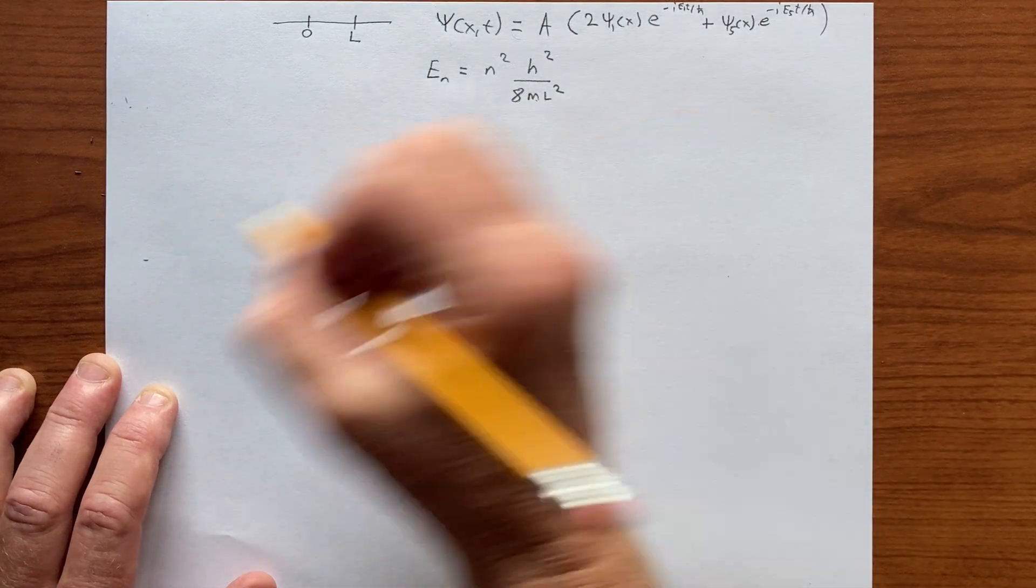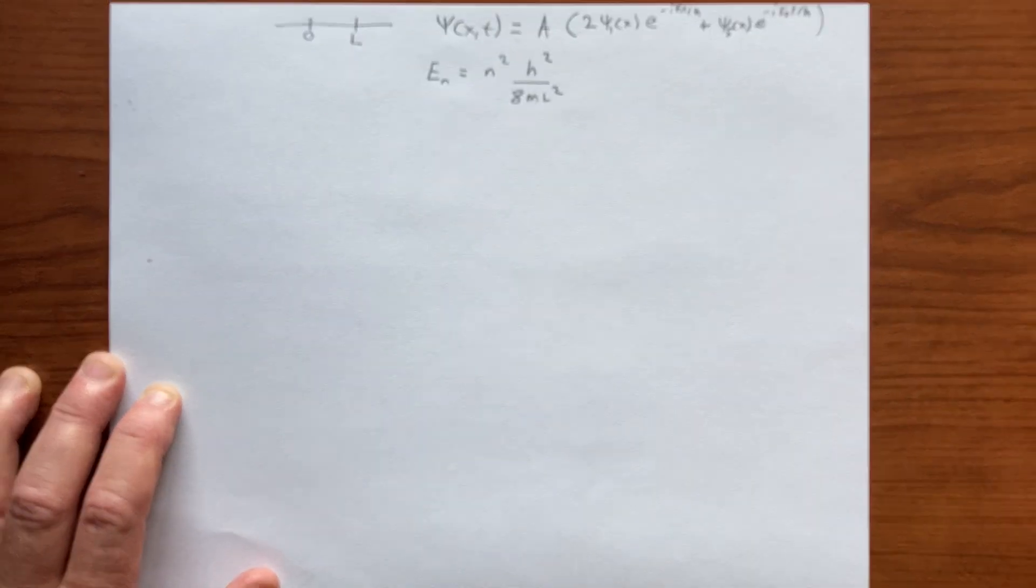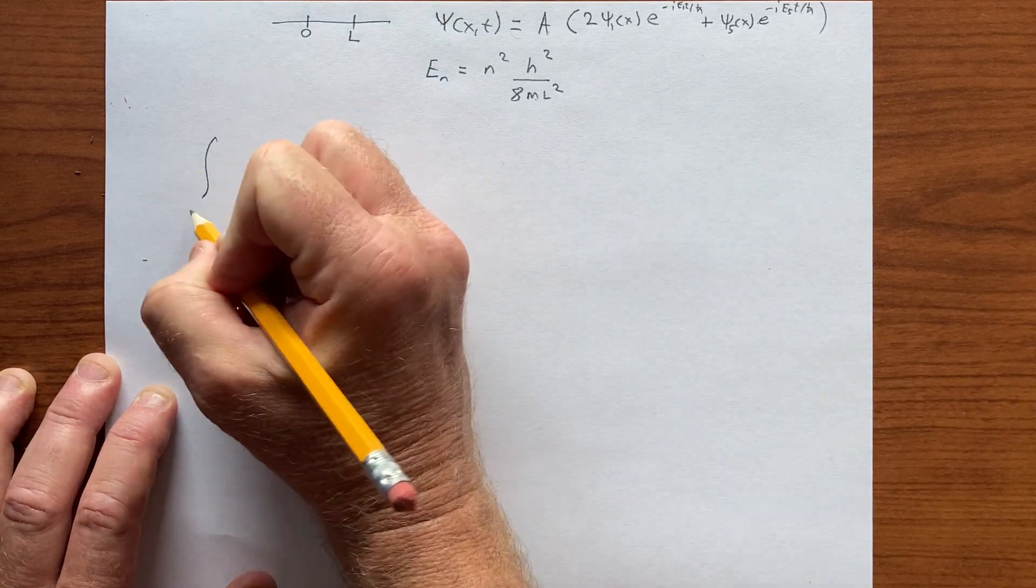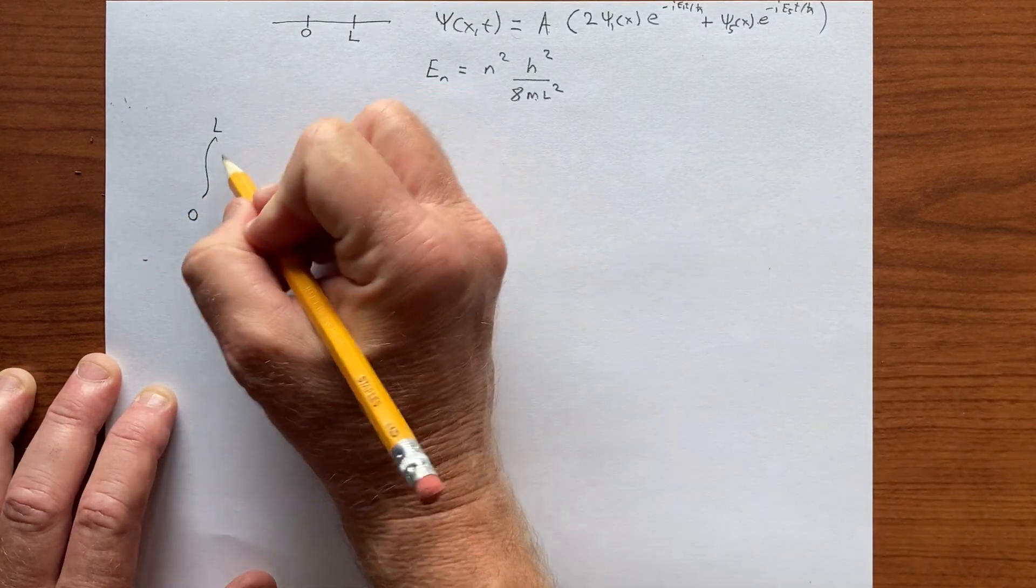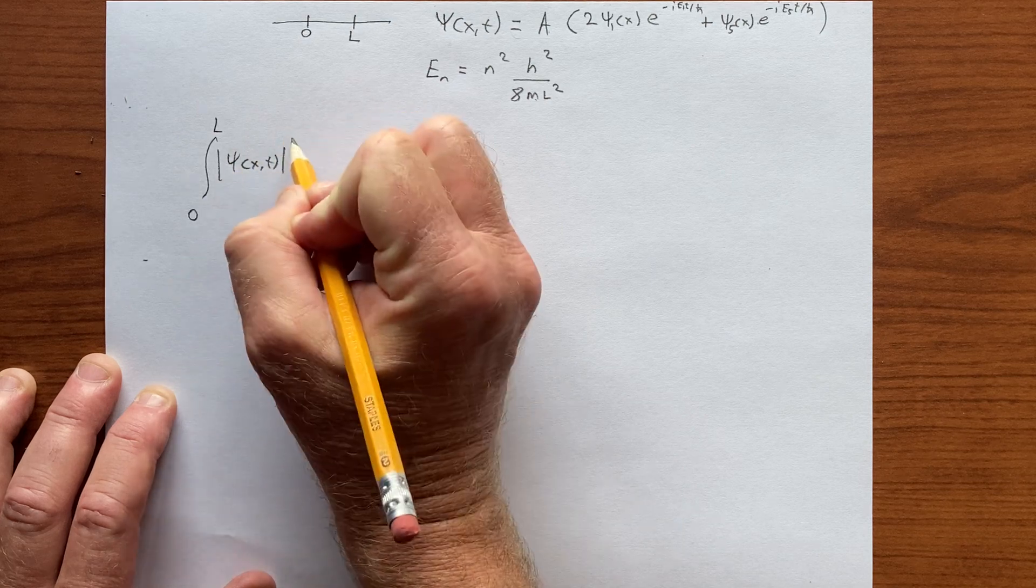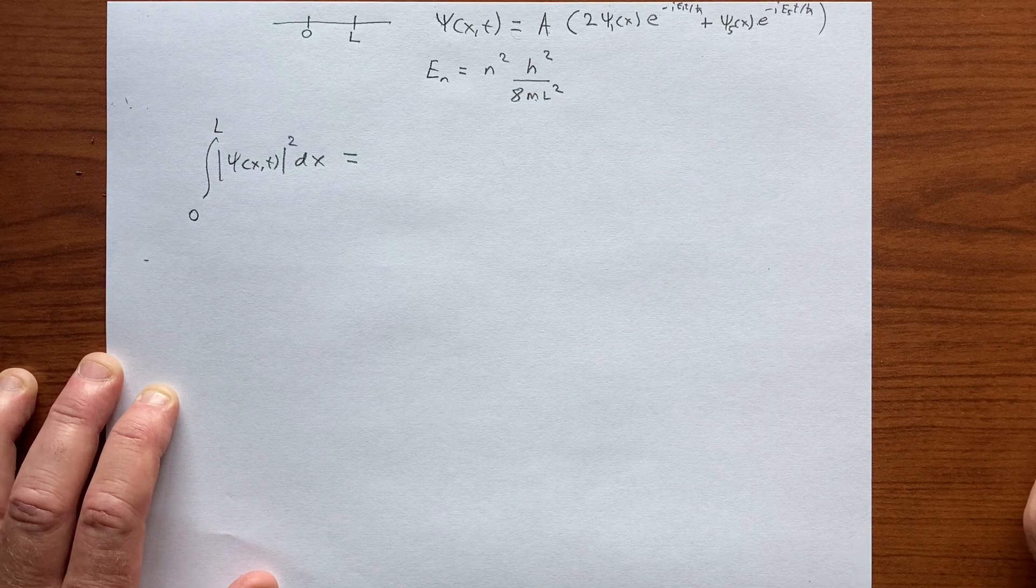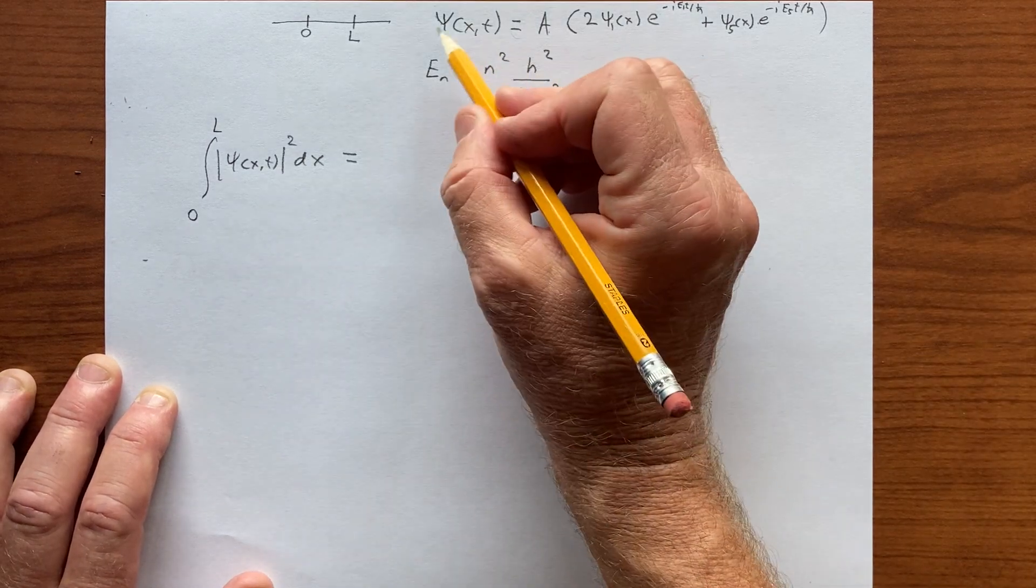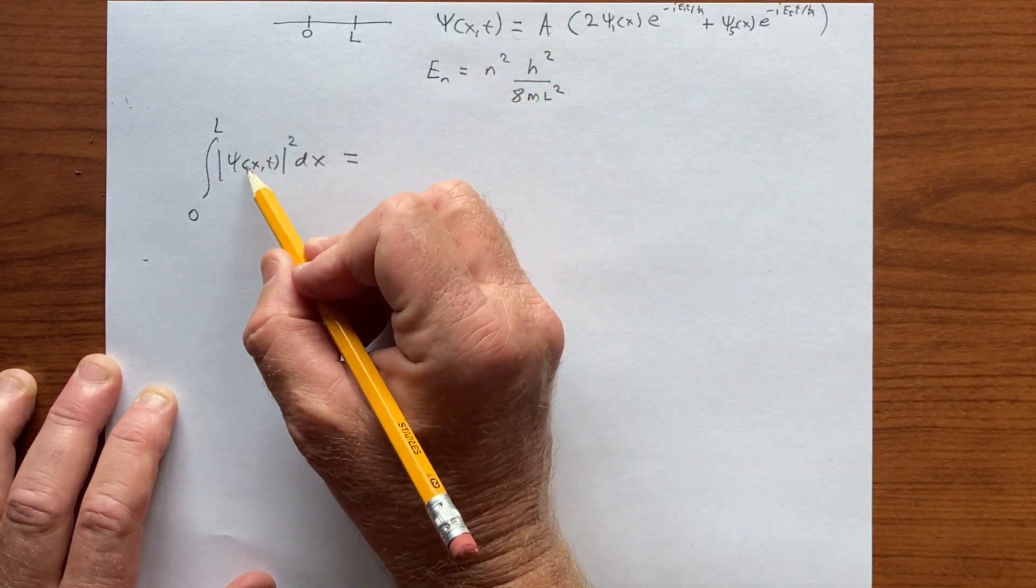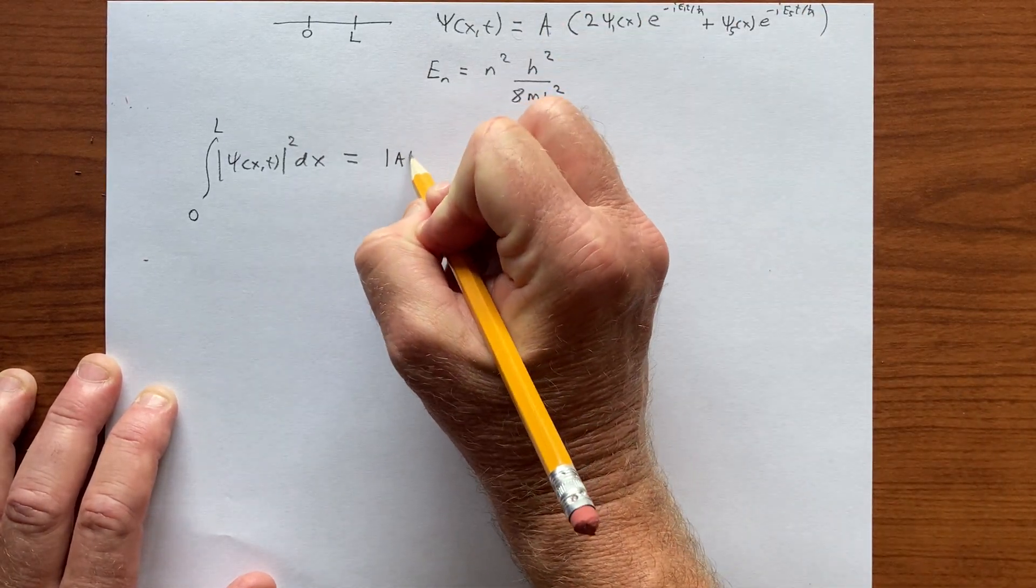But to get the expectation value of energy, we need to know what this is. So we need to normalize. Of course, the integral from zero to L of psi of x and t, modulus squared. This needs to be equal to 1. Well, what do we get? So this is psi star psi, so we get A modulus squared.